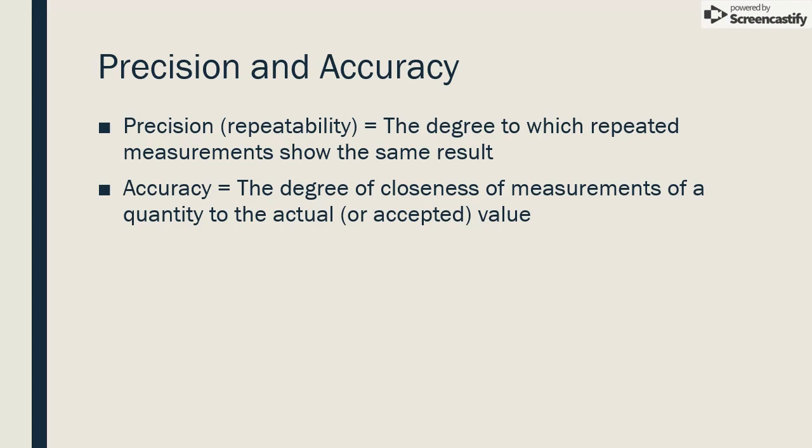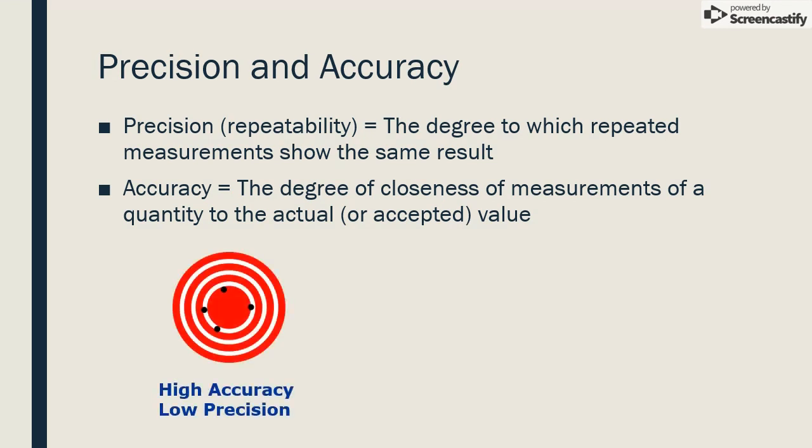It helps to understand these two terms if we think of precision and accuracy like hitting a target. Consider the arrows or dots on the targets to be measurements taken several times. The first target shows that the arrows or repeated measurements are centered around the center of the target, so on the whole the measurements are fairly close to the actual measurement, making the measuring device accurate. But the repeated measurements are not close to each other, so the precision of the measuring device is low.